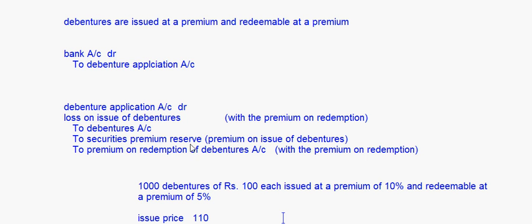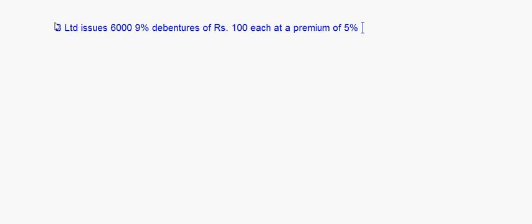To securities premium reserve is the same treatment we used earlier on issue of debentures. Now let's take a new example: B Limited issues 6,000 nine percent debentures of ₹100 each at a premium of 5%.